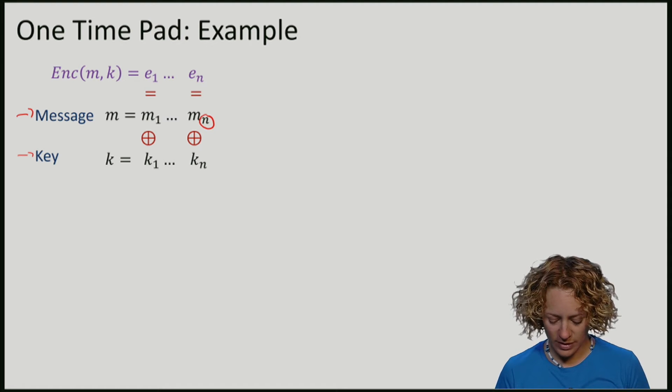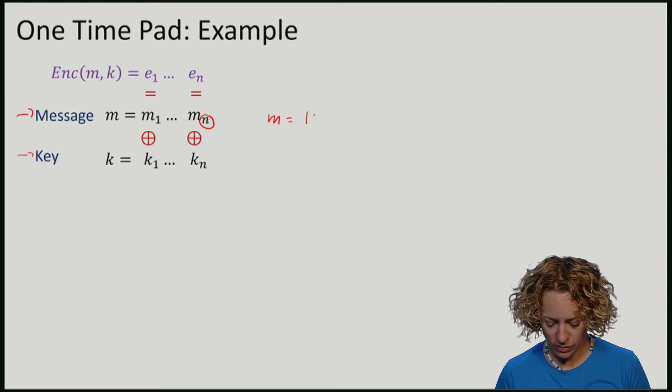So if I now assume that the message consists of the bits 1, 0, 1, 1, and my key k consists of 1, 1, 1, 0,